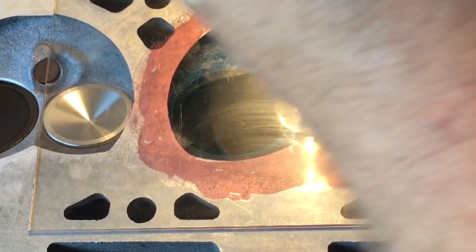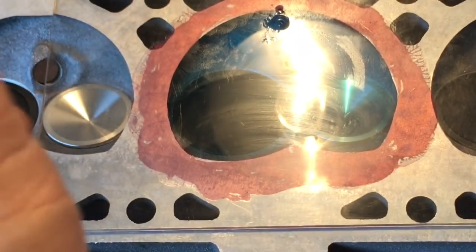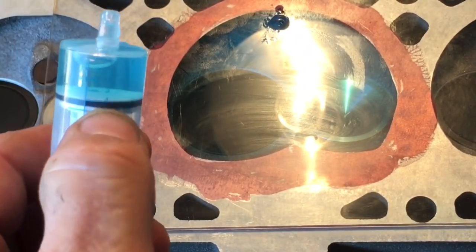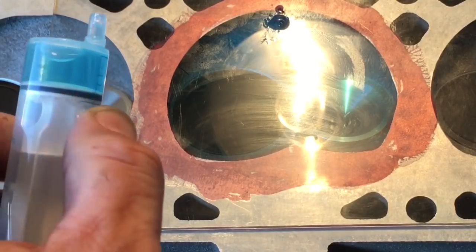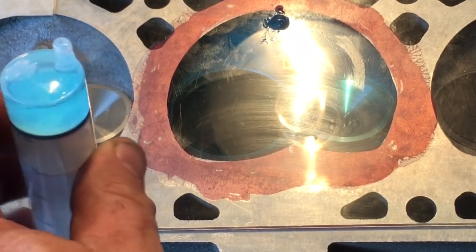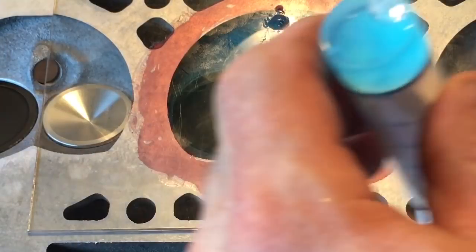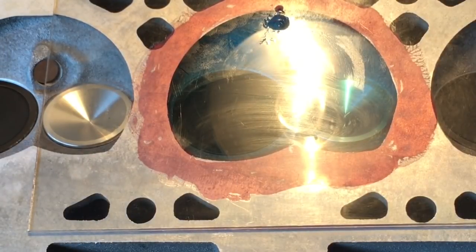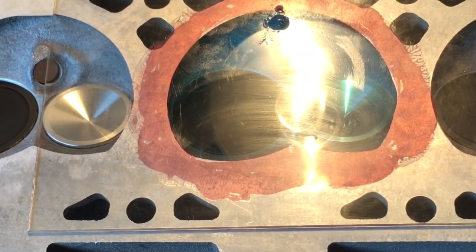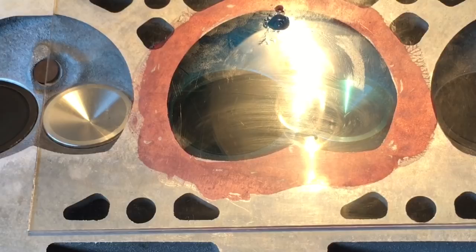And that's at 4. It's exactly, if you guys can see that, it's exactly at 4 milliliters. The little air bubble that comes from that little nipple. So this head, after having it milled 30 thousandths, is 61 cc's.